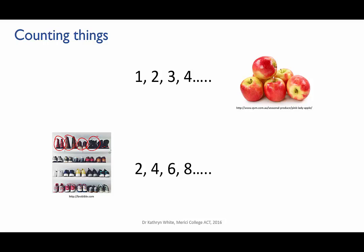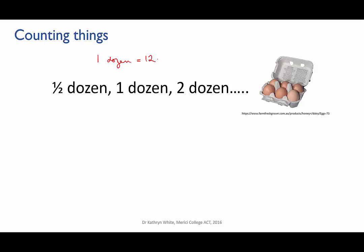In other situations we might need a larger number to skip count with. Eggs and doughnuts are often measured in dozens. We understand that one dozen means 12, so when someone talks about say four dozen doughnuts, we can calculate that they mean 4 times 12, which is 48 doughnuts. This picture shows six eggs—half of 12—so this is half a dozen eggs.